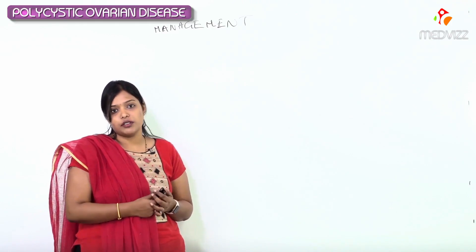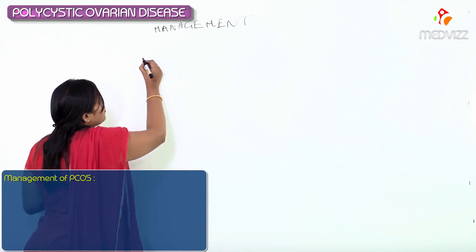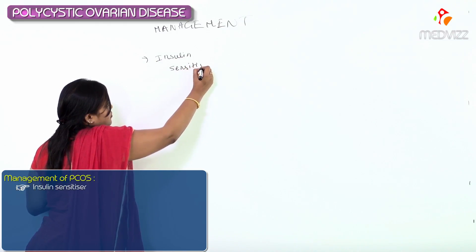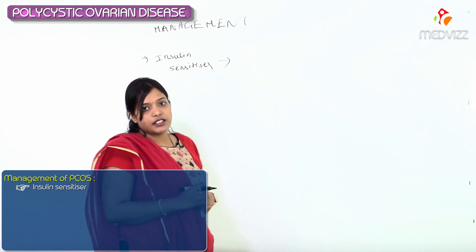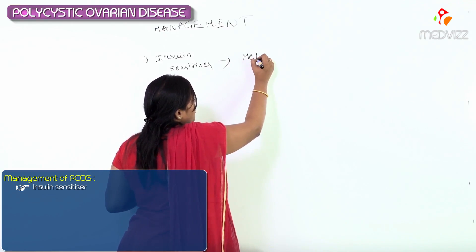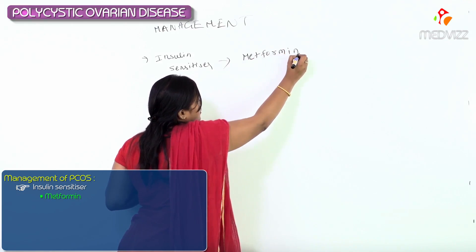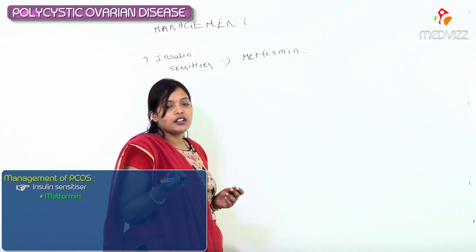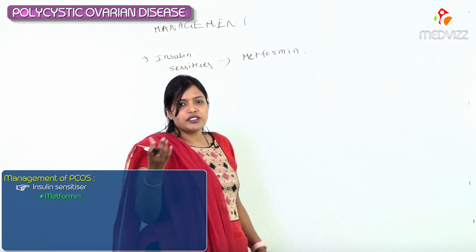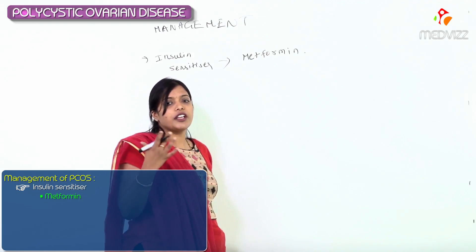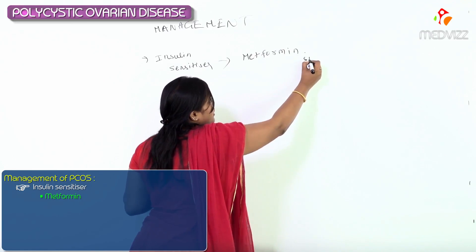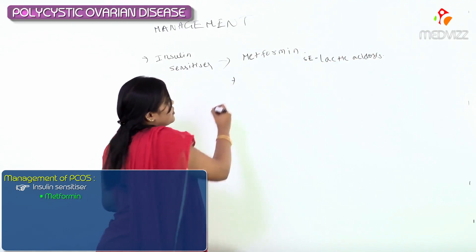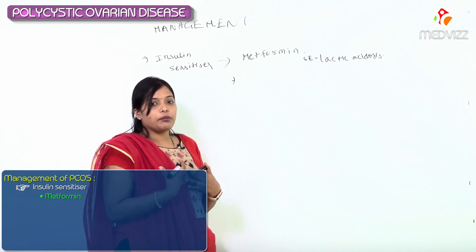Insulin causes LH to increase and theca cell hypertrophy to happen. So we want to cut out insulin — decrease the levels of insulin. In management we can use insulin sensitizers. The main drug is Metformin, an oral hypoglycemic agent used to decrease insulin resistance. A classically asked question: what is the dangerous side effect of Metformin? It causes lactic acidosis.